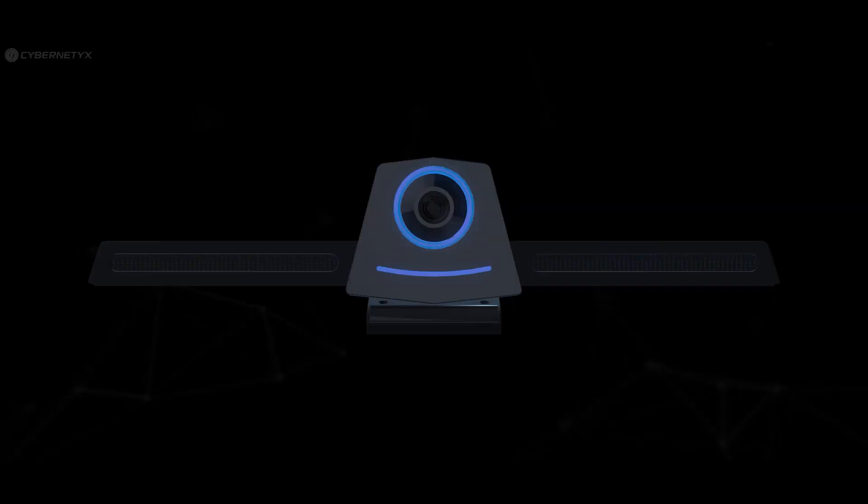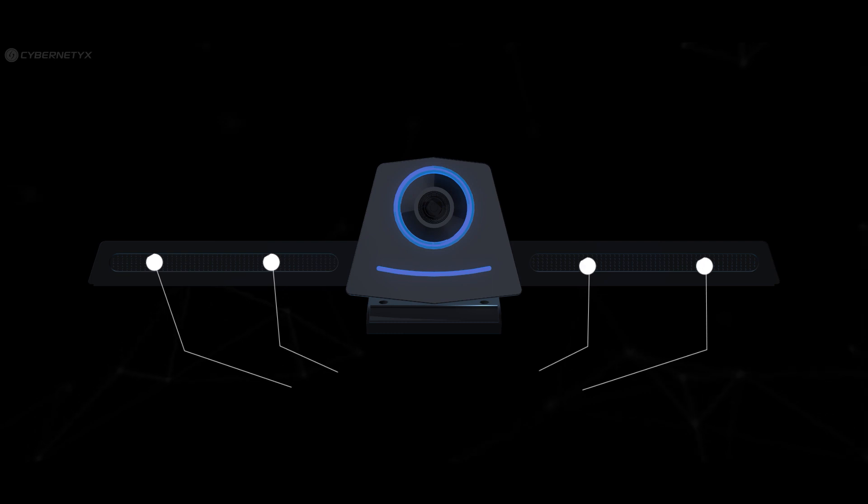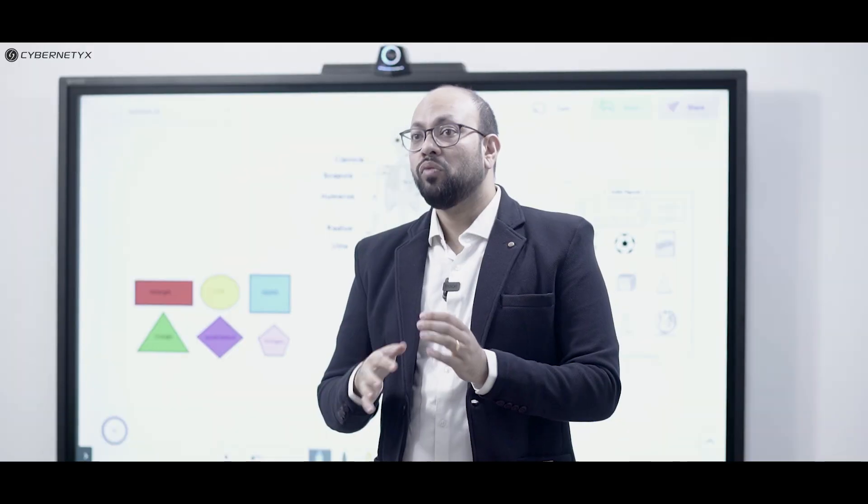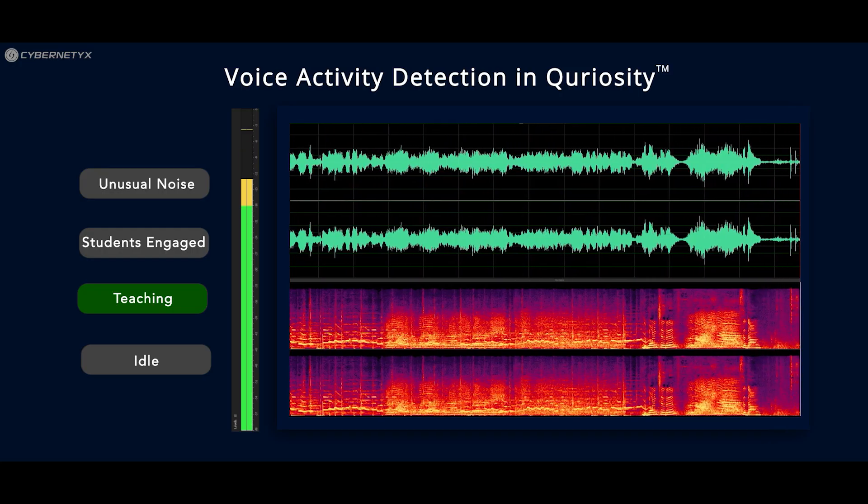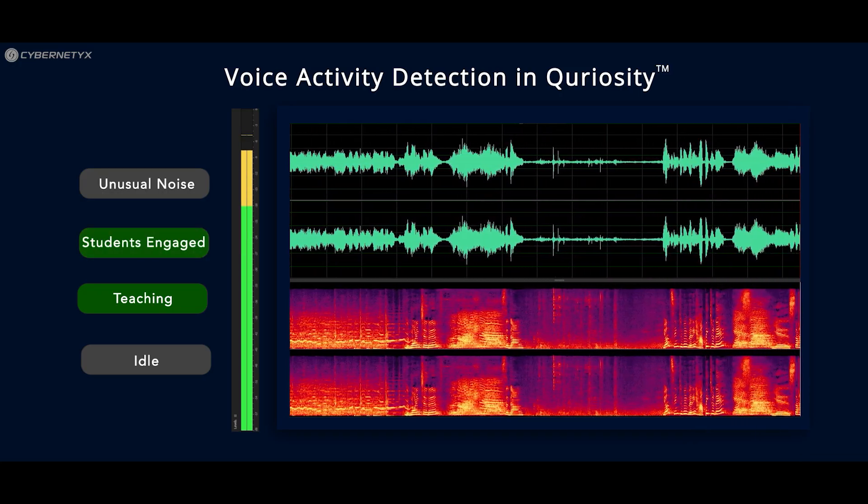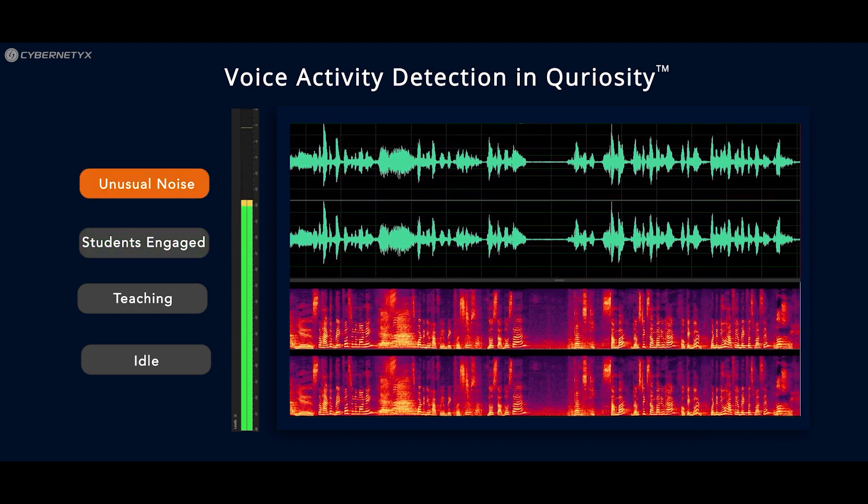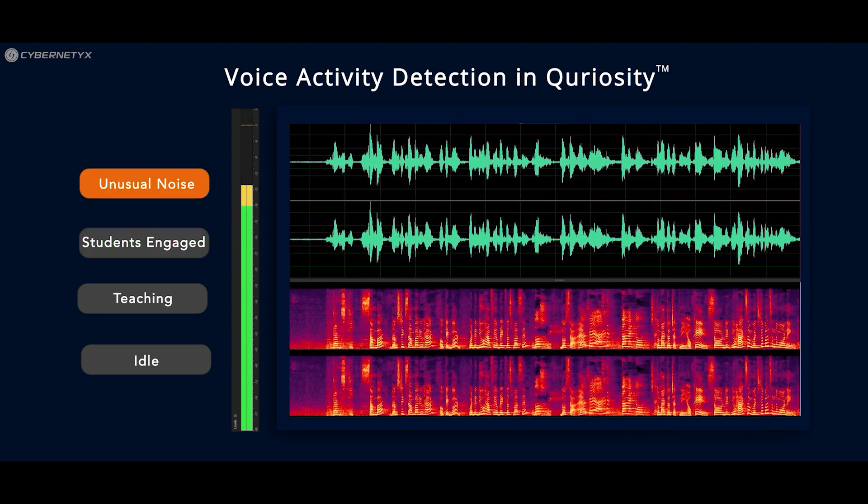The Class EQ camera also has a beamforming mic array with 4 MEMS microphones and a 16-core digital signal processor that uses AI to perform voice activity detection and direction of arrival. When someone is speaking in the classroom, the mic can focus on the speaker and suppress surrounding noise. These microphones can also detect unusual noise levels in the classroom.